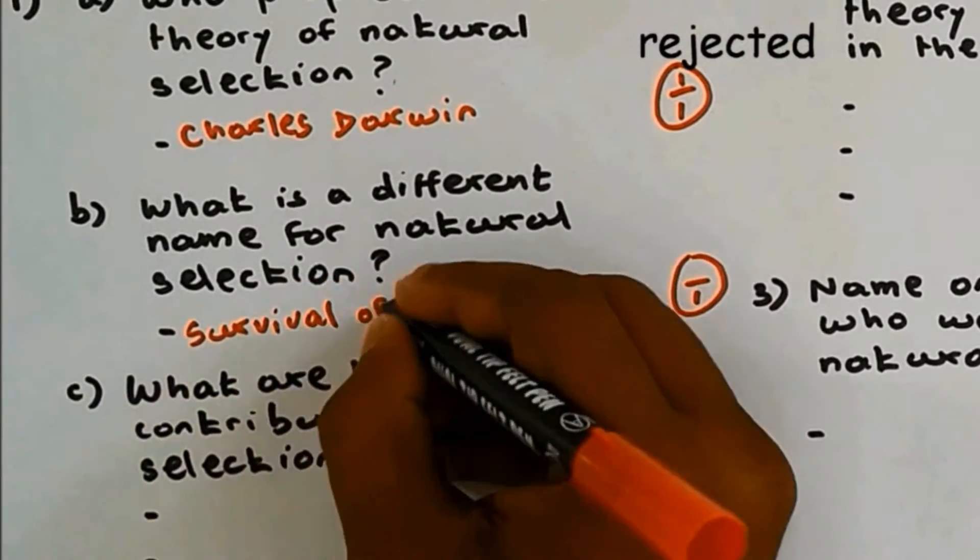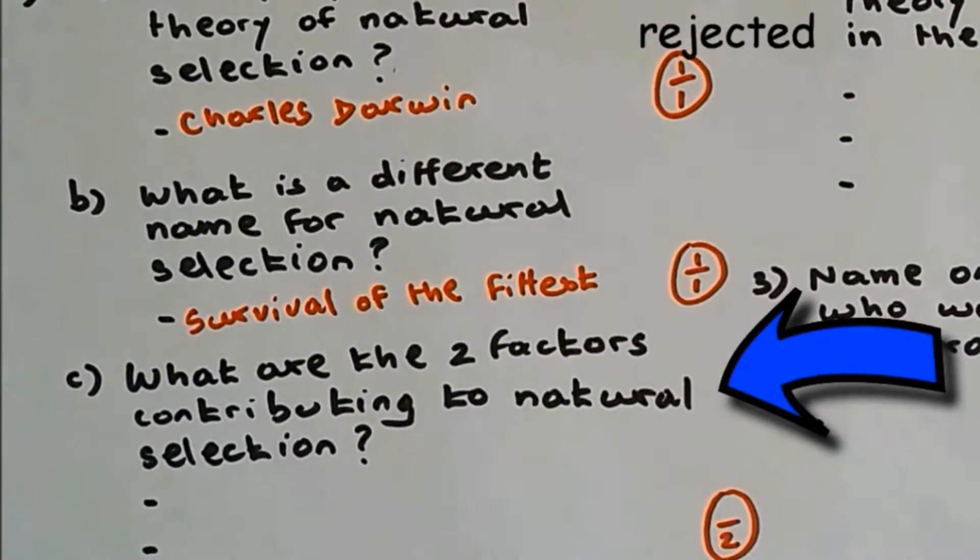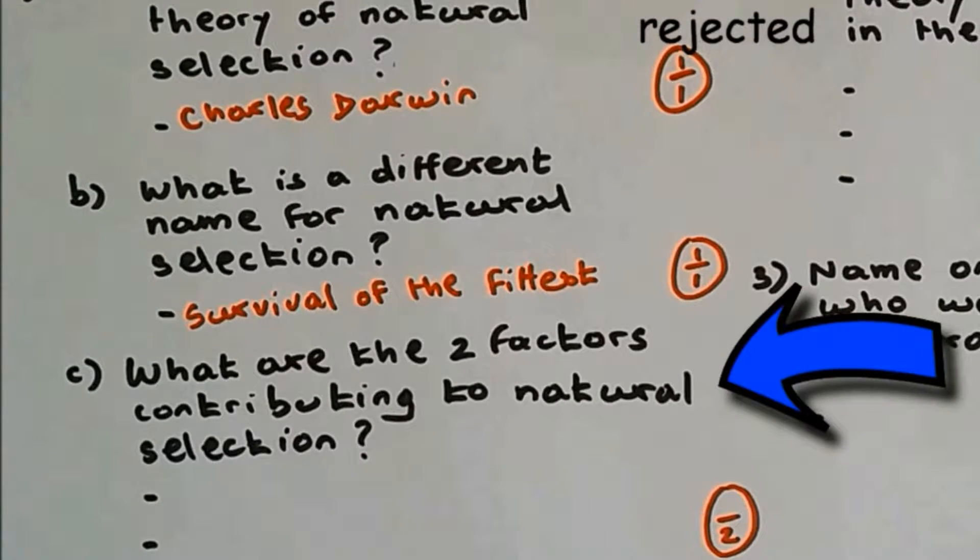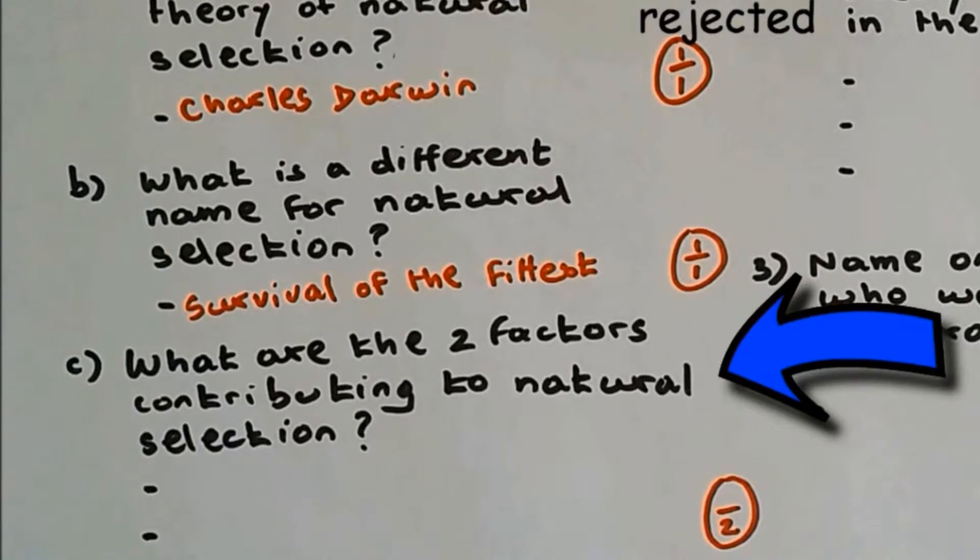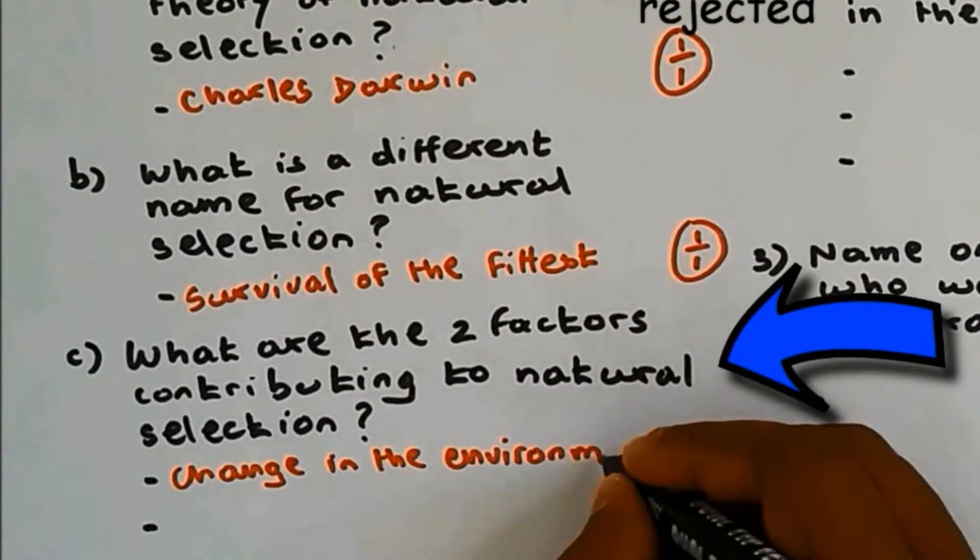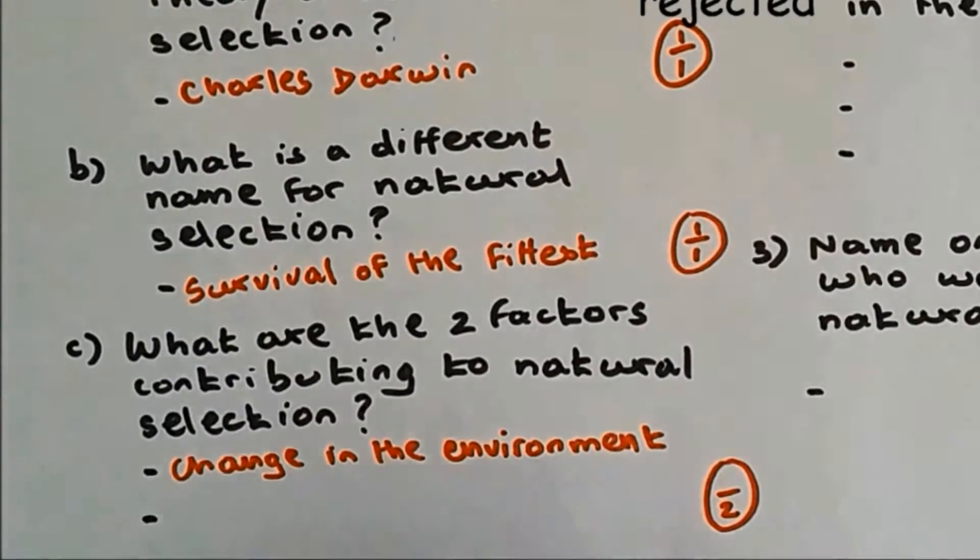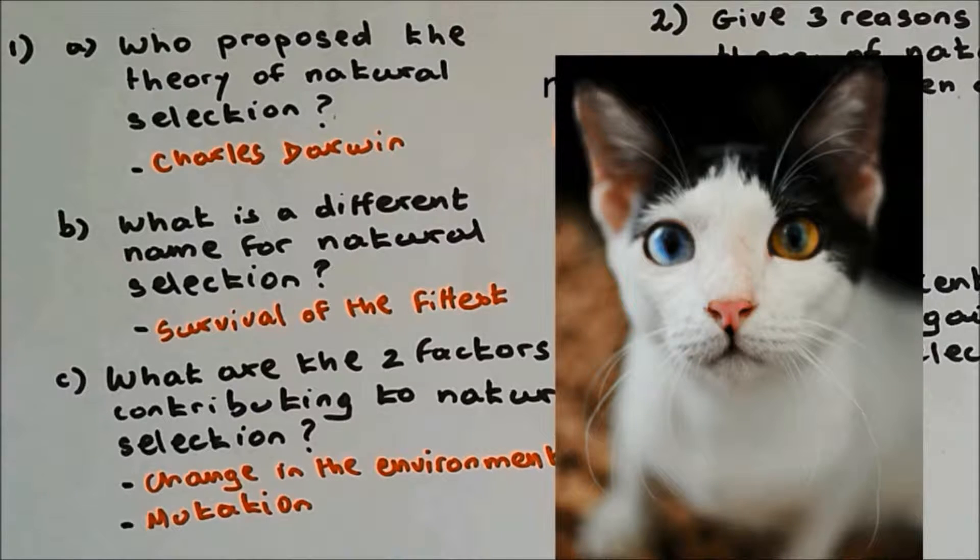What are the two factors contributing to natural selection? These two factors are change in the environment and mutation. Mutation is a change in DNA. If there's a change in DNA, then there will be a change in characteristics. So this new characteristic could be an advantage, disadvantage, or neutral.